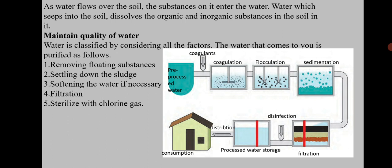Many substances get mixed with water available in nature. Before reaching the ground, rainwater mixes with solids such as dust, bacteria, and gases like carbon dioxide and oxygen. As water flows over the soil, substances on it enter the water, and when water seeps into the ground, it dissolves organic as well as inorganic substances present in the soil.